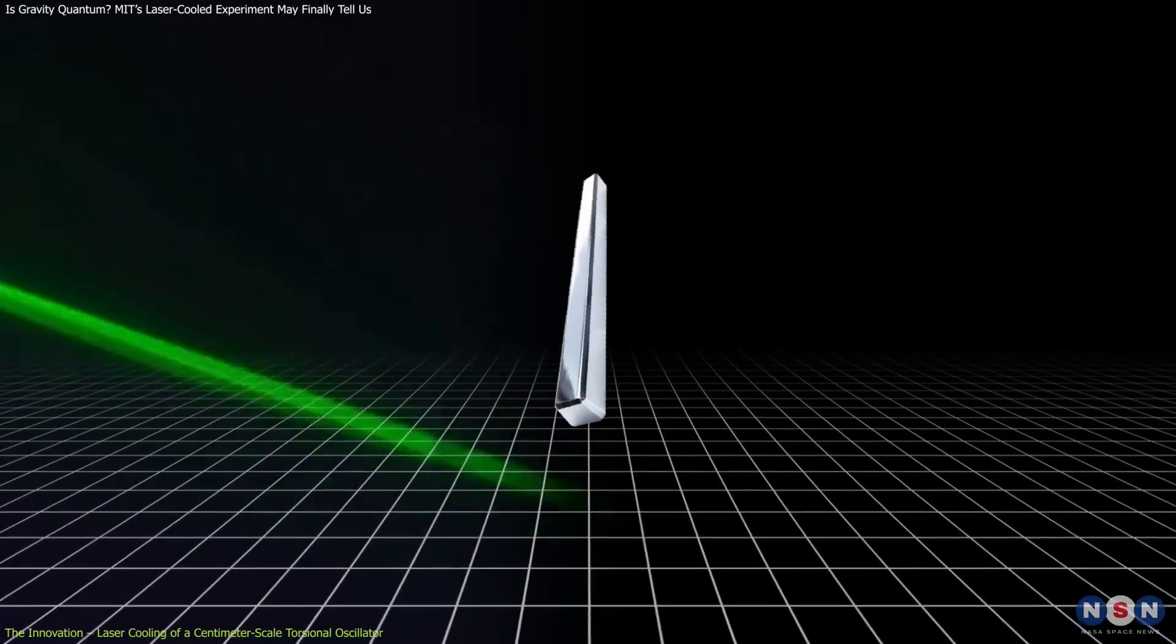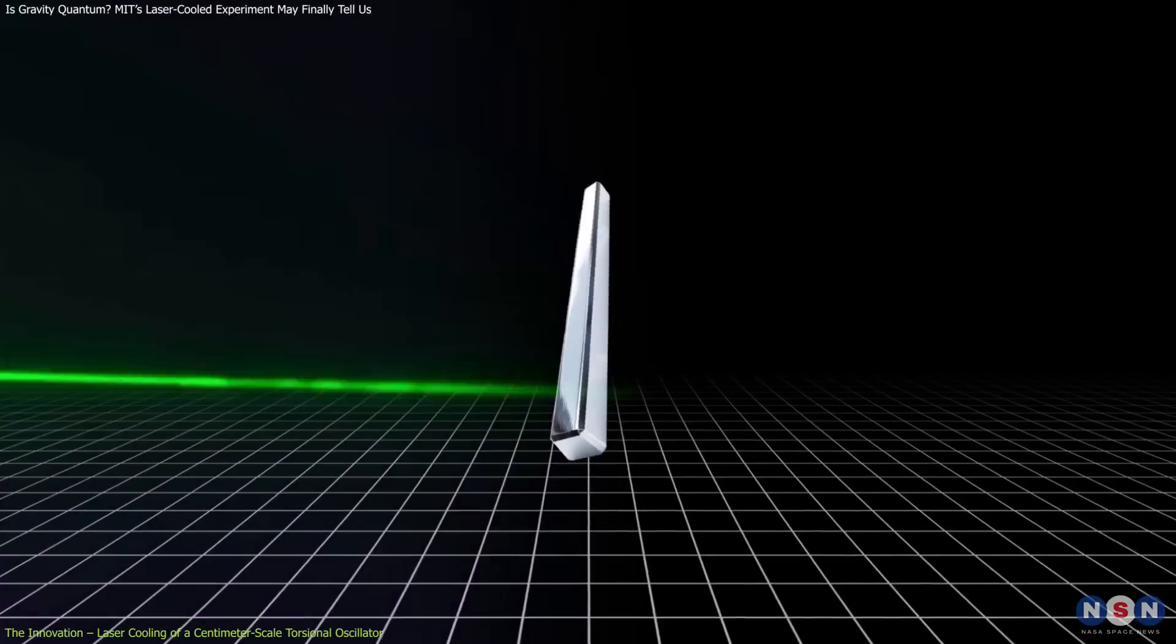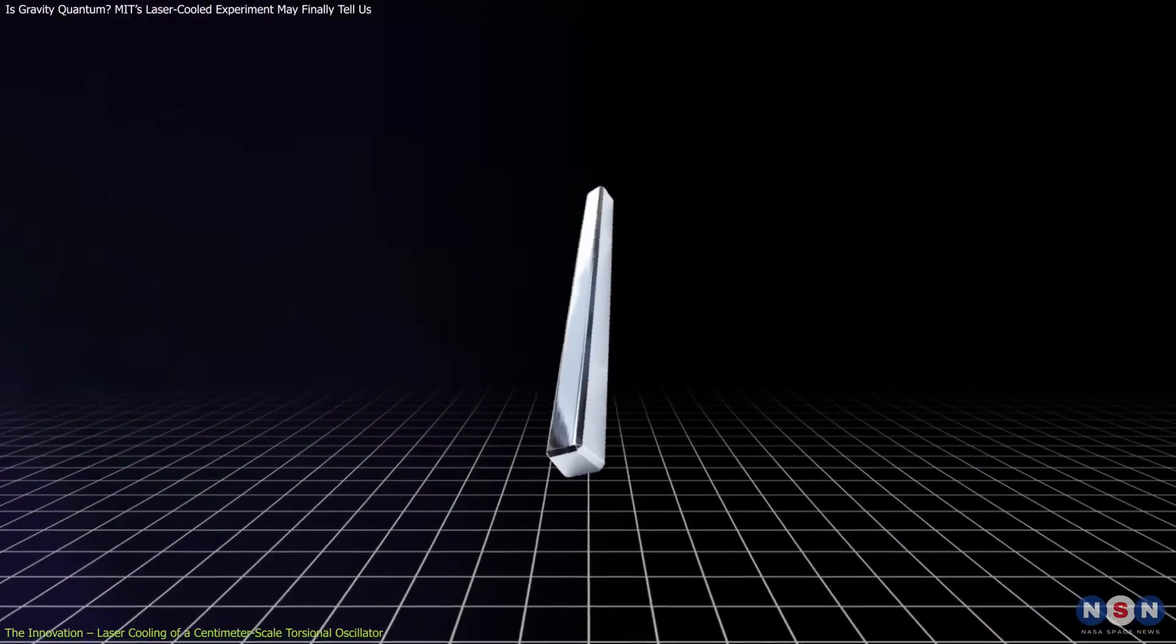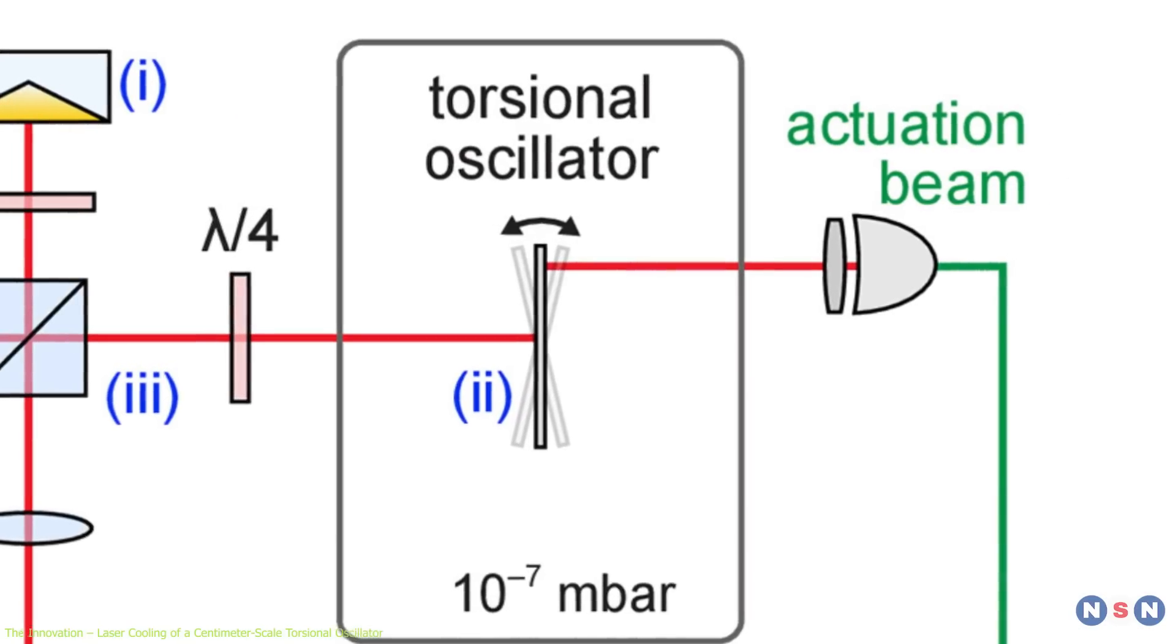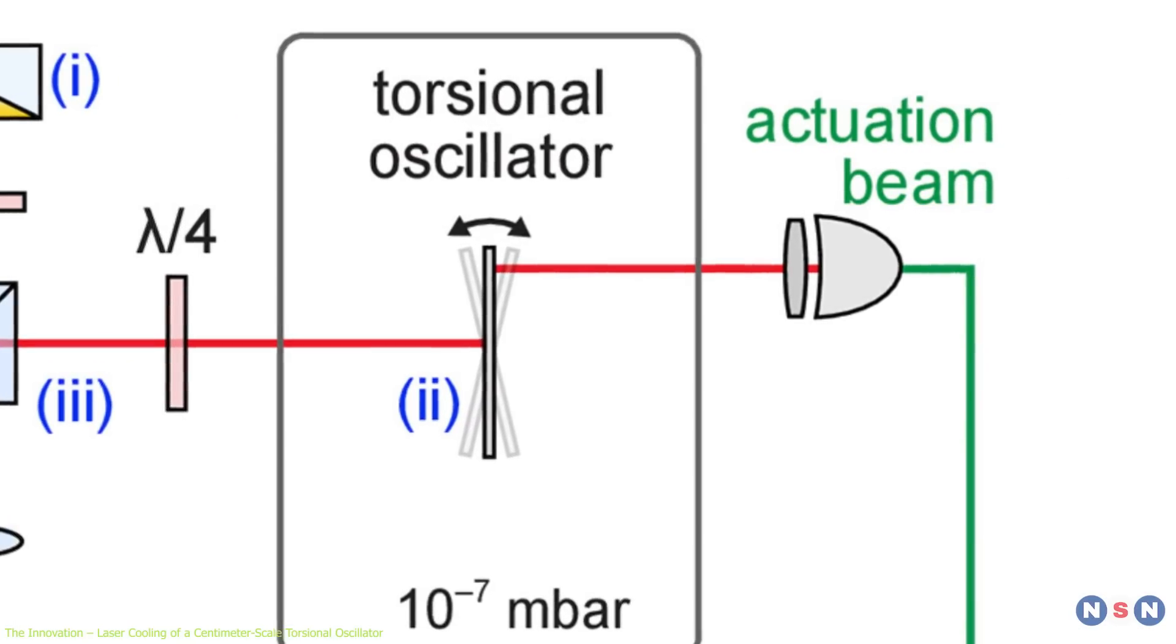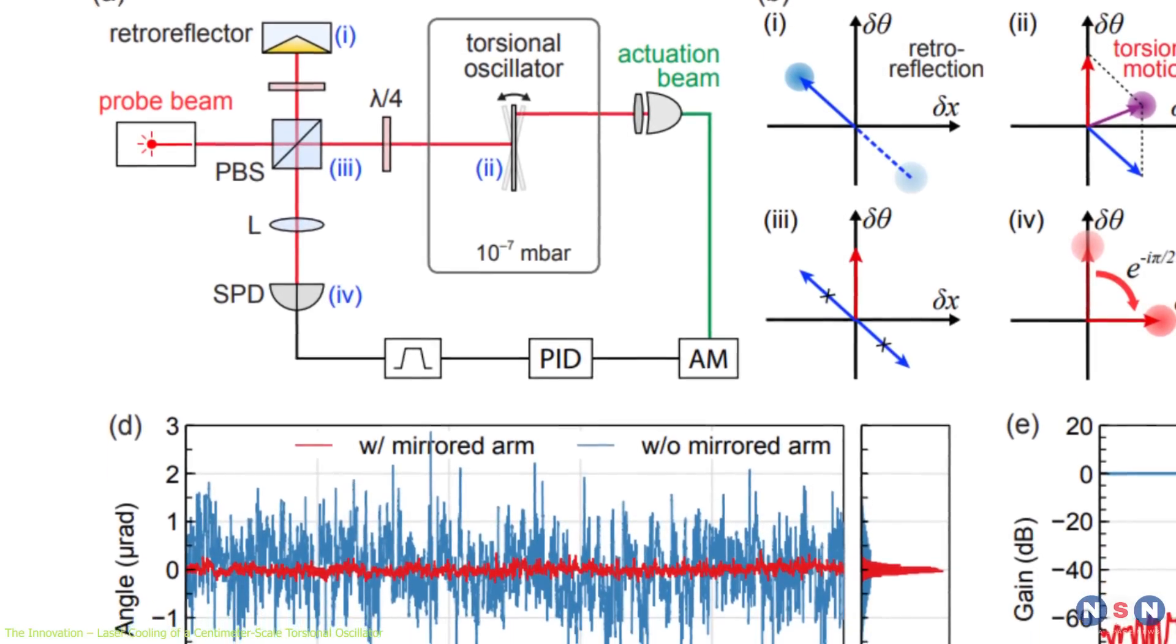Here's how it worked. A laser beam was directed at a tiny mirror fixed to the oscillator. As the oscillator twisted even slightly, the reflected laser beam moved across a detector. Because even a small angular movement shifts the beam noticeably, this approach offers extreme sensitivity.